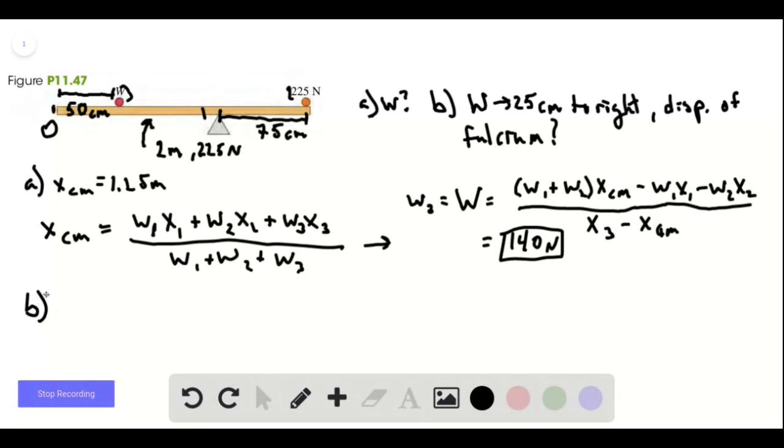We know that w3 is equal to 140 newtons. So now all we have to do is compute the new center of mass.